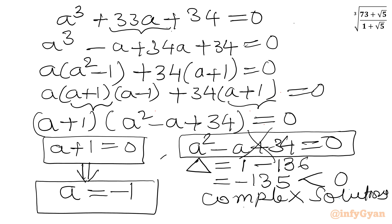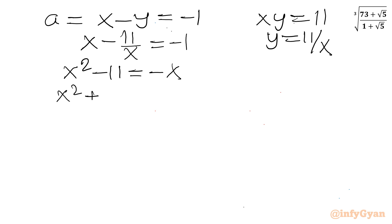Now a was our substitution. a was x minus y equal to negative 1. And xy was 11. So from here we can write y equals 11 over x, which we can apply here. Equal to negative 1. Multiply both sides by x. So x square minus 11 equal to minus x. x square plus x minus 11 equal to 0.